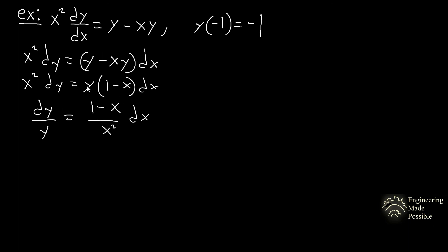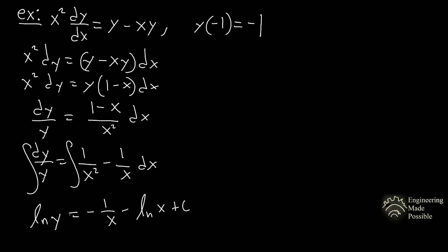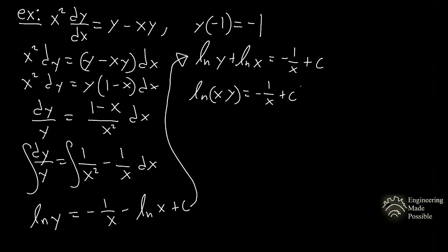Simplify the right side: (1 − x)/x² becomes 1/x² minus 1/x. Integrating both sides gives: ln|y| equals −1/x minus ln|x| plus an arbitrary constant. Since plugging in the initial condition (−1, −1) into ln|negative 1| would be undefined, move the natural log terms together to get ln|xy| equals −1/x plus C.